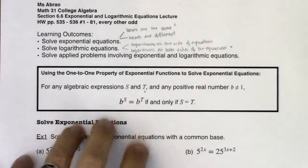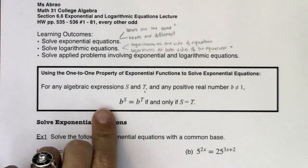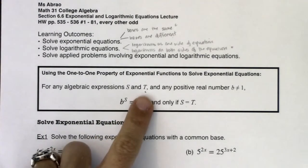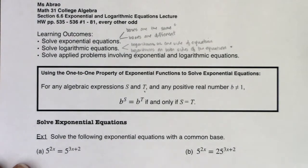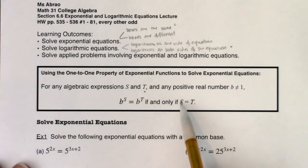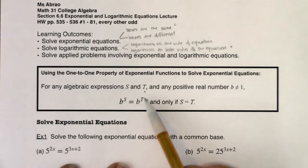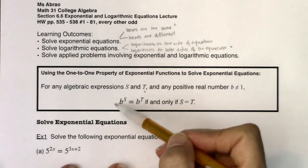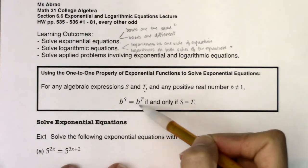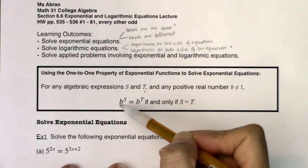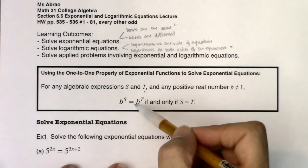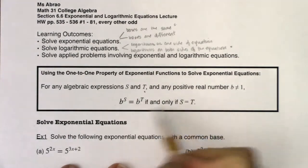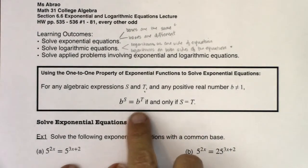If we have an exponential equation and the bases are the same on each side — for any algebraic expressions s and t, and any positive real number b such that your base does not equal 1 — if b to the s is equal to b to the t, then it's implied that s is equal to t. So if you have two powers with the same base, then the exponents must also be the same. If the bases are the same, the exponents have to be equal, and that's an if and only if — it goes both directions.